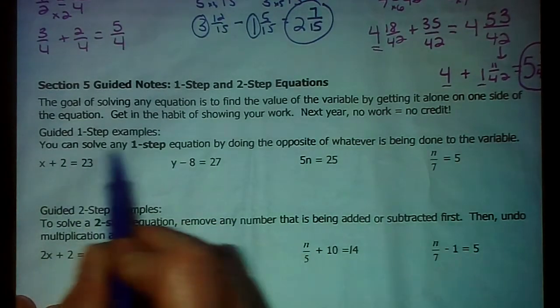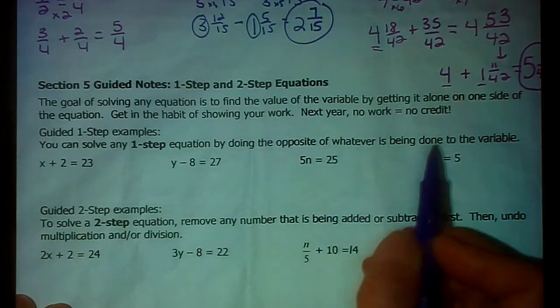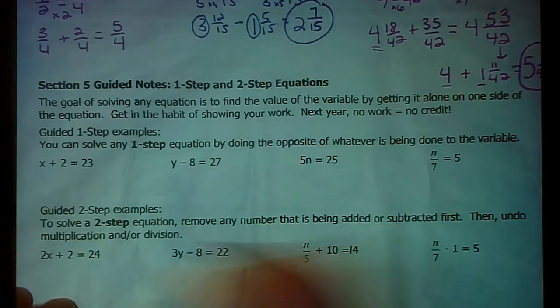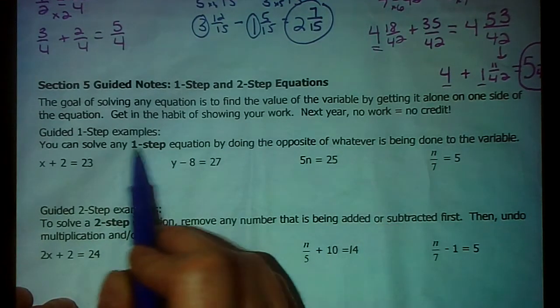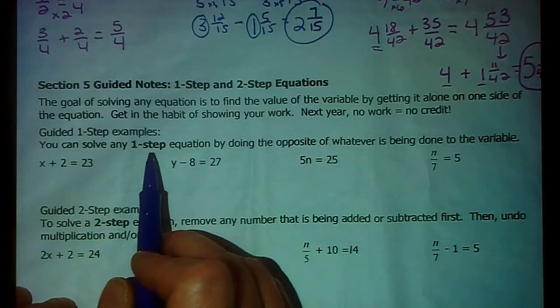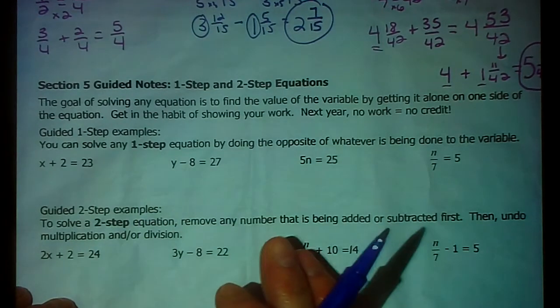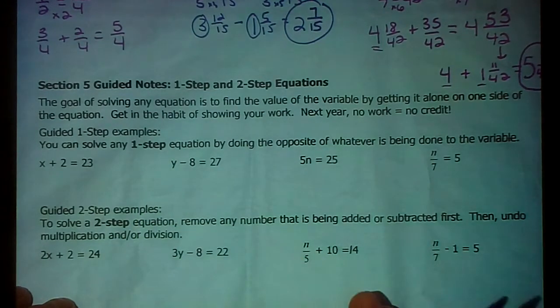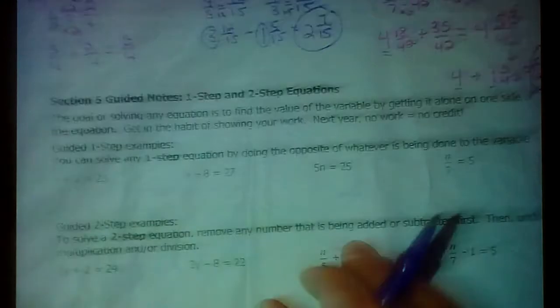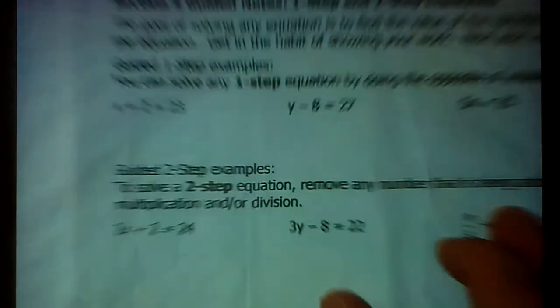Alright, so you can solve any one step equation by doing the opposite of whatever is being done to the variable. And I just want to talk for just a second. The reason it's called a one step is because there is one thing that's being done to the variable. So when we get to two steps in a minute, can you guess how many things are being done to the variable? Not ten. No, it's two. So, one step equation. X plus two equals twenty-three.